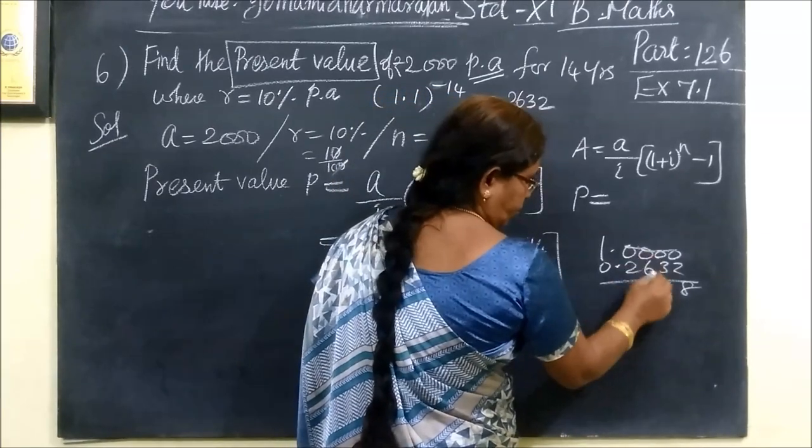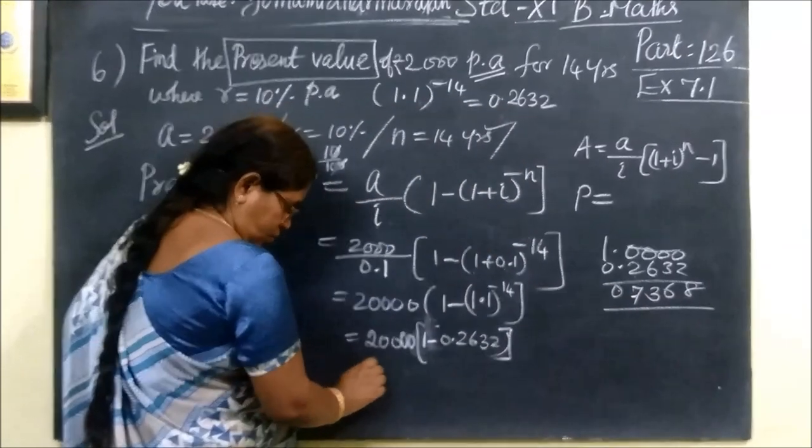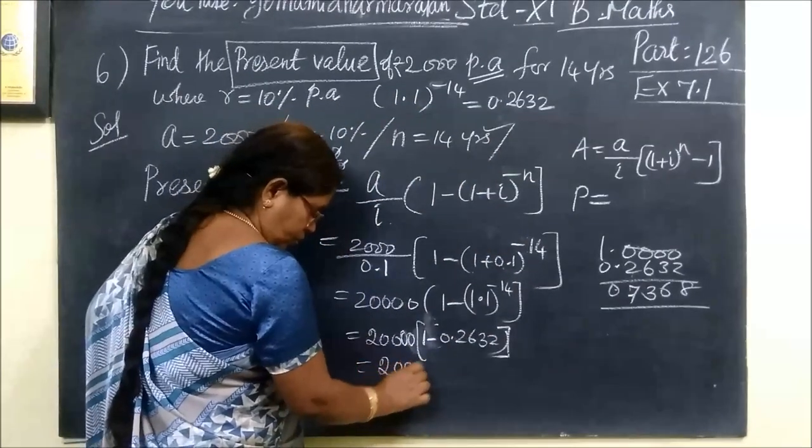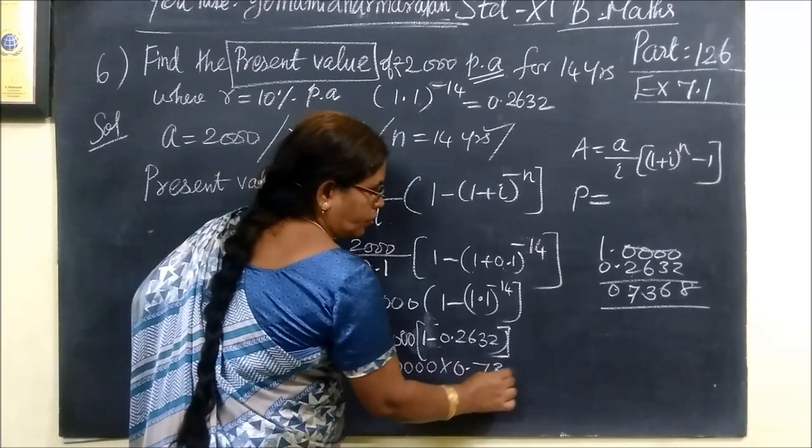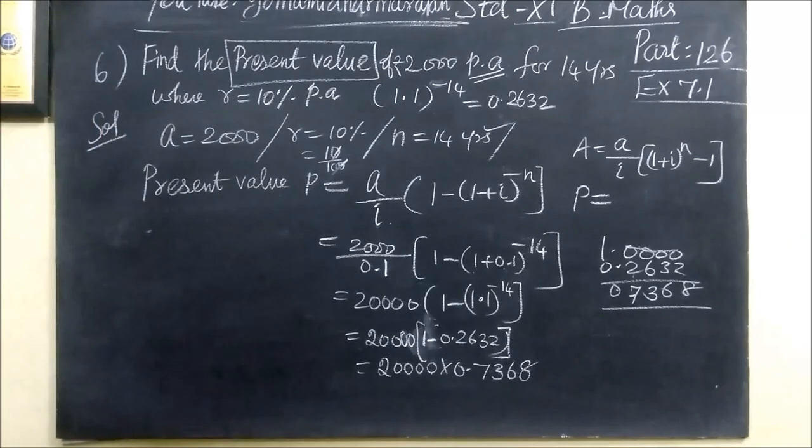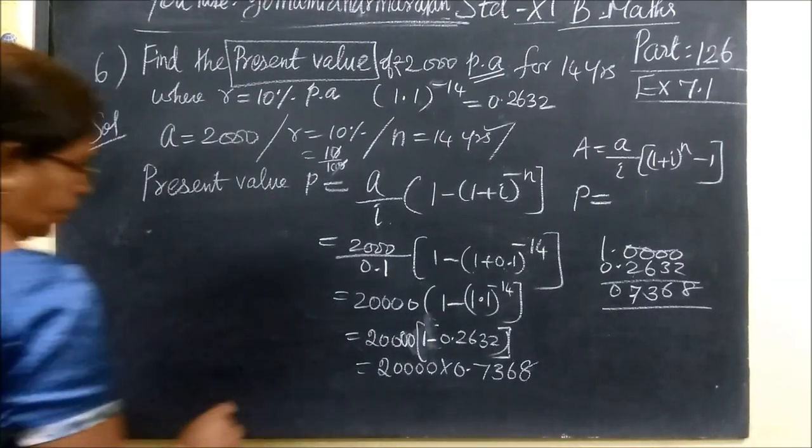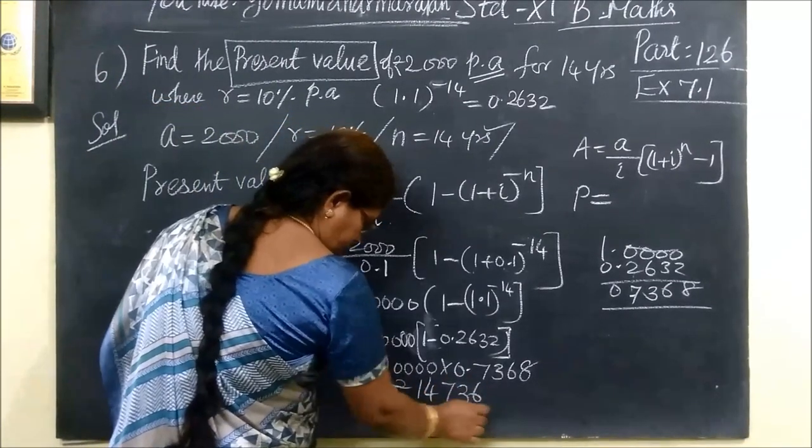So this one, 2000 into 0.7368. The answer is 14,736. That is the present value.